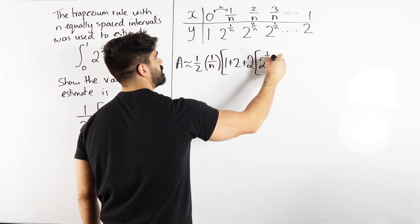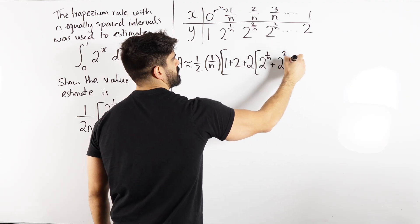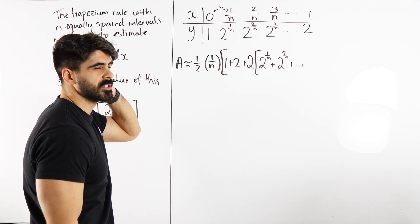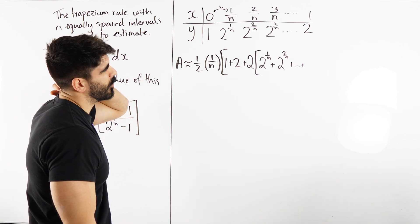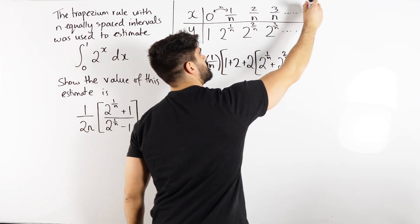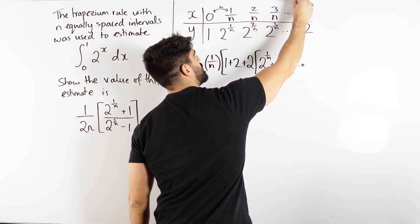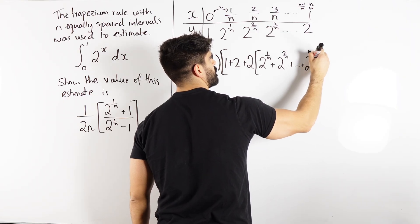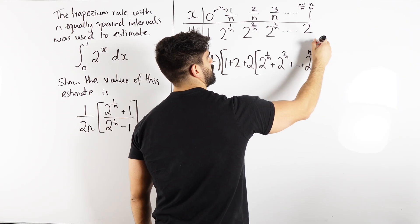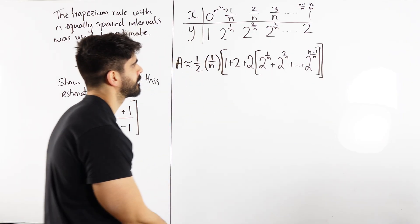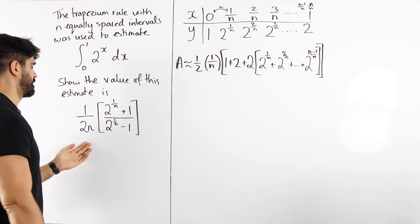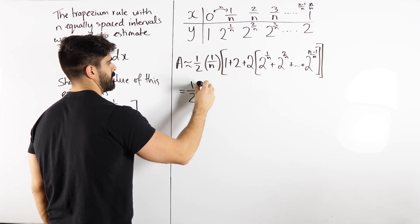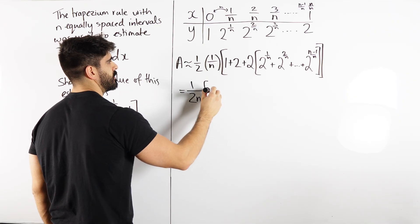Which is 2 to the power of 1 over n, 2 to the power of 2 over n, plus dot dot dot. What would the term before the 1 be? Well the 1 is n over n, so the term before that will be n minus 1 over n. So 2 to the power of n minus 1 over n. I've got the 1 over 2n, and then we have 3 plus 2 lots of this.